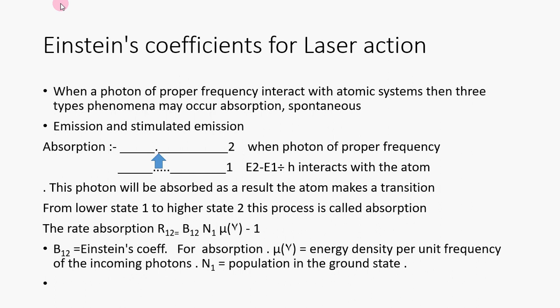This process is called absorption. The rate of absorption R12 is directly proportional to B12 N1 μ(ν) minus 1. B12 is Einstein's coefficient for absorption, μ(ν) is energy density per unit frequency of the incoming photons, N1 is population in the ground state. Now the atom is in an excited state.